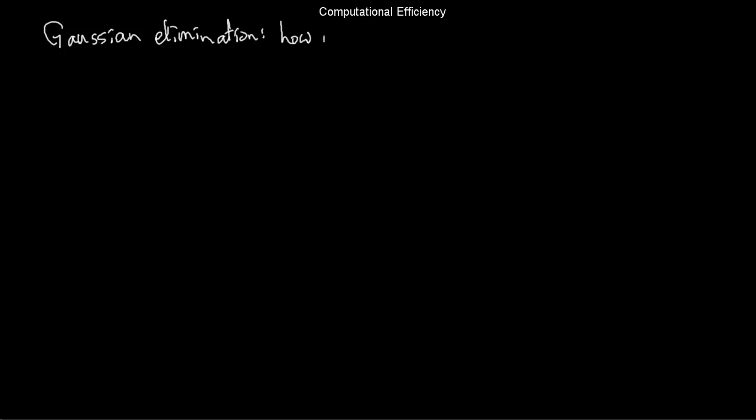Welcome back. Today we're going to have a video on the computational efficiency of Gaussian elimination. Specifically, we want to answer the question: how many operations do I have to do in order to row-reduce a matrix to perform this Gaussian elimination?